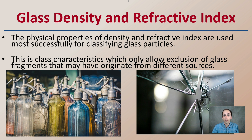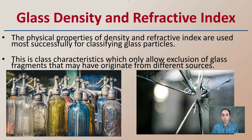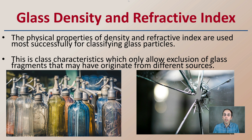This allows us only to exclude glass fragments that may have originated from different sources. It can't tell us it came from the front window; it can tell us it came maybe from a window compared to glass that might be in a canning jar, for example, or a mirror. It might be different types of glass, so this density can allow us to classify that.